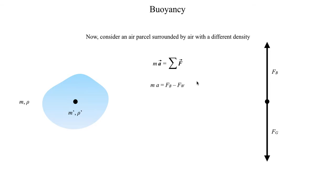Rewriting the equation using our defined conventions, m becomes m-prime. The mass of the air parcel times the acceleration equals the buoyant force — which is the weight of environmental air displaced by the air parcel — minus the force of weight of the air parcel itself. Just think back to the simple example: if the air parcel displaces 10 newtons worth of air, the buoyant force is also 10 newtons, trying to displace the air parcel upward.